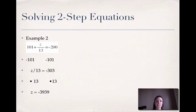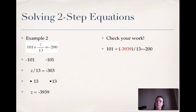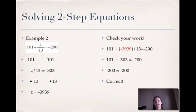Especially if you get a crazy answer like this, you want to check your work. So as a reminder, we do that by putting our answer in whenever we saw the variable. So it becomes 101 plus negative 3939 divided by 13. If we did everything correct, that should equal negative 200. So negative 3939 divided by 13 gives us negative 303. So I have 101 plus negative 303. That should equal negative 200 as long as we did everything right. So go ahead and check it, but it does. It works out. So we're correct. Awesome.